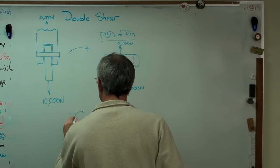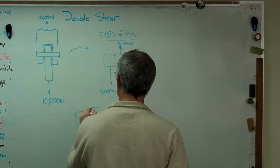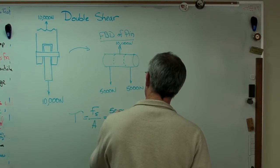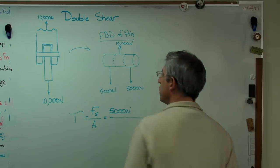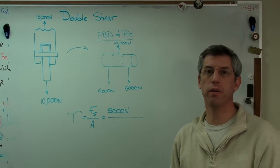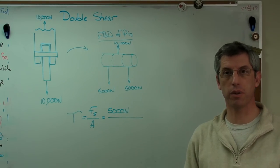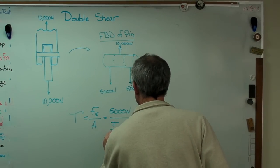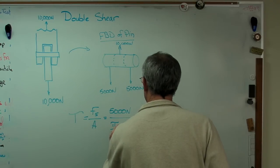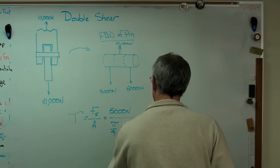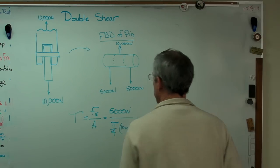Okay, so the expression for shear stress is very simple. It's shear force over area. Well, we already know that's 5,000 newtons. An area is pi r squared, or sometimes it's more convenient to say pi over 4 times diameter squared. I'm going to do that. They're mathematically equivalent, so it doesn't matter. It's d squared. So that's 10 millimeters squared.